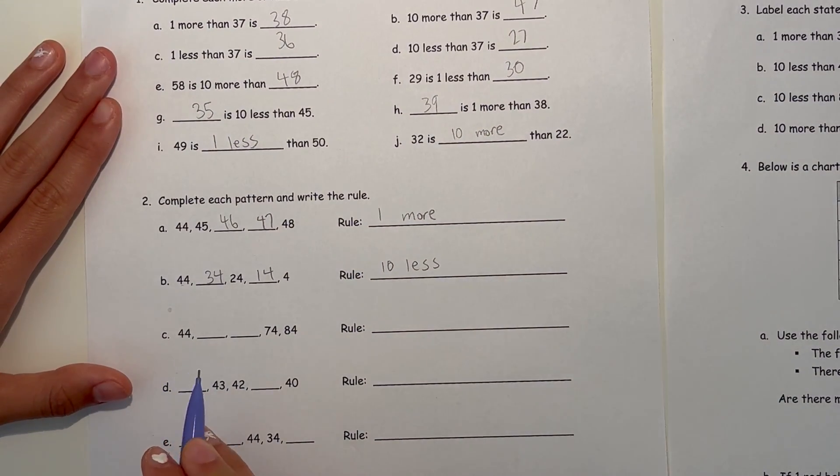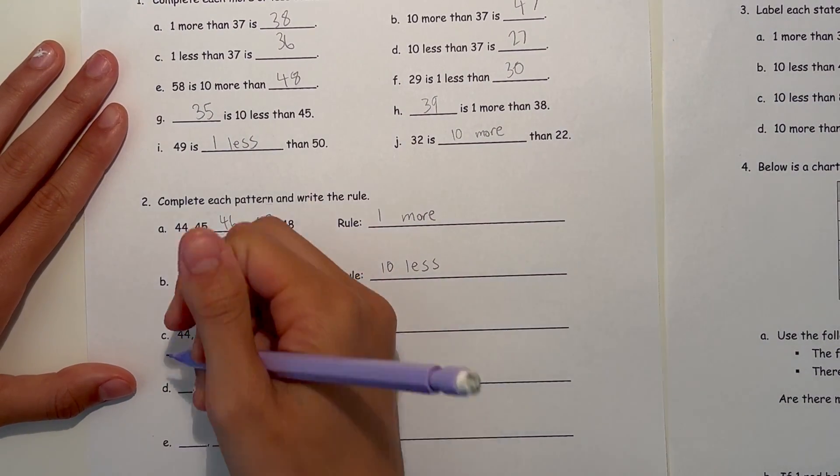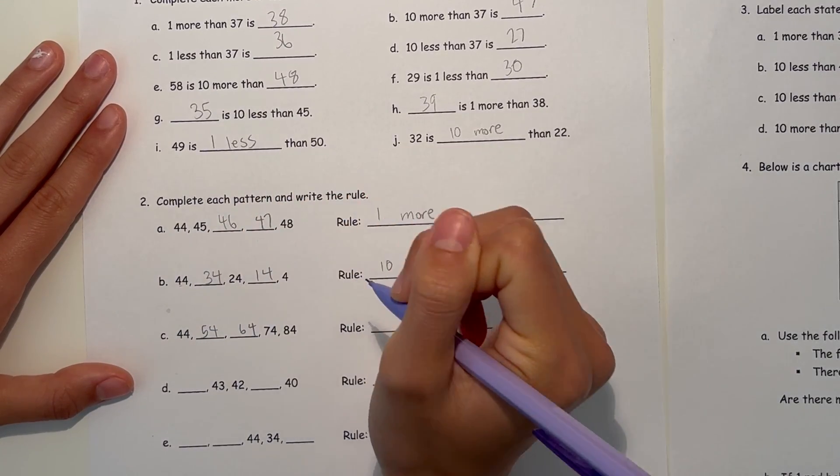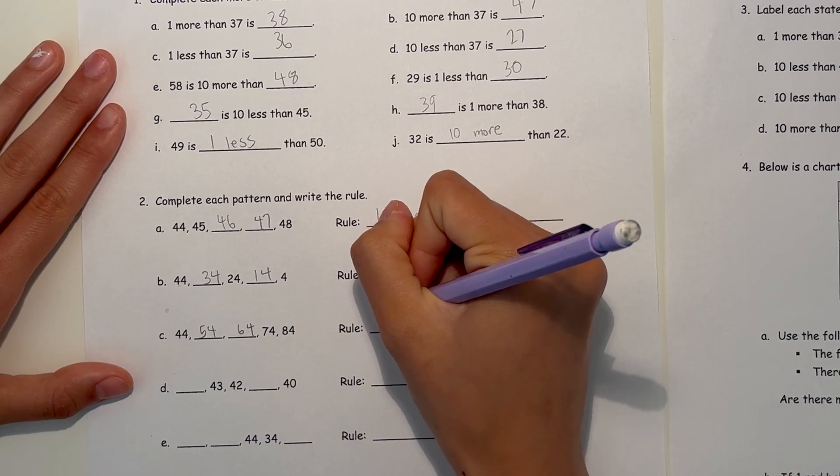Now C, 44. Let's see. It's a big jump too. So maybe tens. This is 54, 64, 74, 84. So the rule would be 10 more.